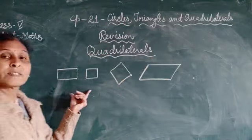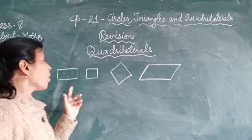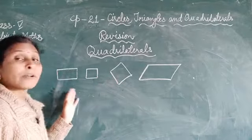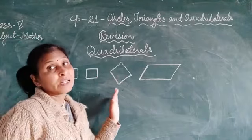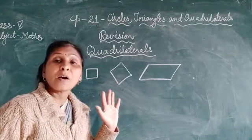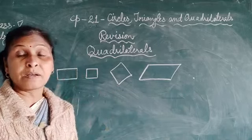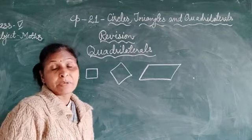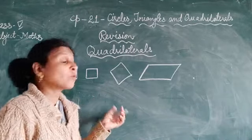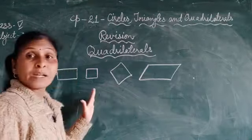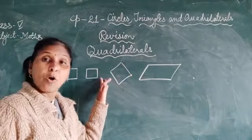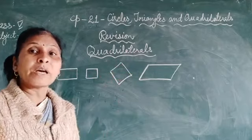What is common in them? They all have four sides. They are called quadrilaterals. A simple closed figure bounded by four line segments is called a quadrilateral. Again I repeat: a quadrilateral is a simple closed figure bounded by four line segments, that is called a quadrilateral.